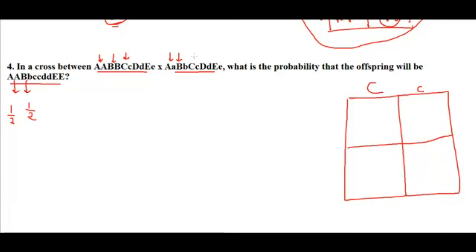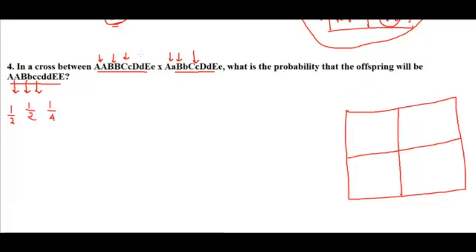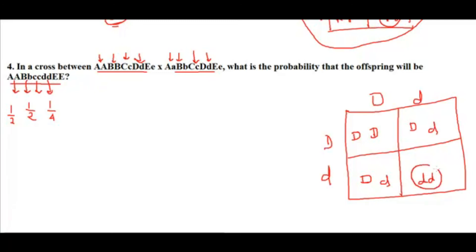For gene C: parent one is Cc and parent two is also Cc. The possible outcomes are CC, Cc, Cc, cc. The offspring combination asked is cc — one out of four, so probability is one by four. For gene D: parent one is Dd and parent two is also Dd. Again the offspring asked is dd — one out of four probability.